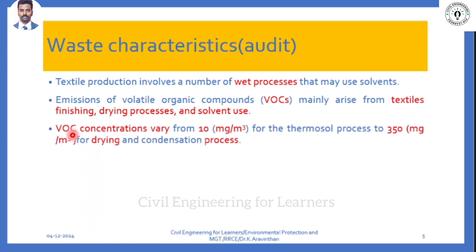Due to VOCs, rivers get majorly polluted. From the textile industry, will you get effluent waste or emission waste? Effluent means water waste; emission means gaseous or air-oriented waste. From the textile industry, effluent waste is more frequent. More effluent waste will be there, and less emission waste. If you are going to do an audit for a textile industry, you should particularly concentrate on effluent rather than emission.